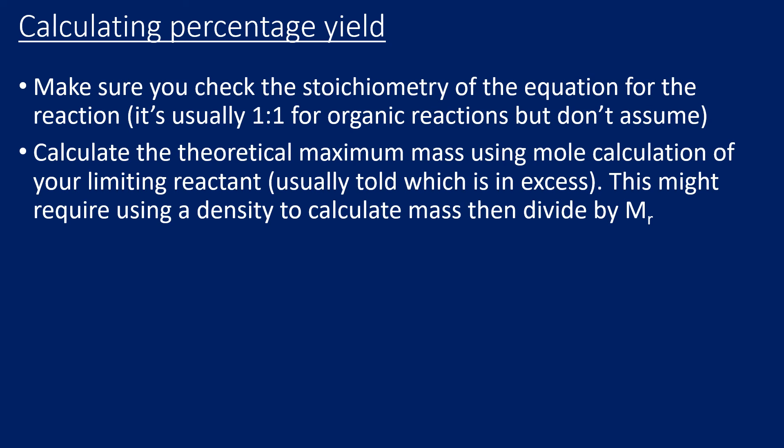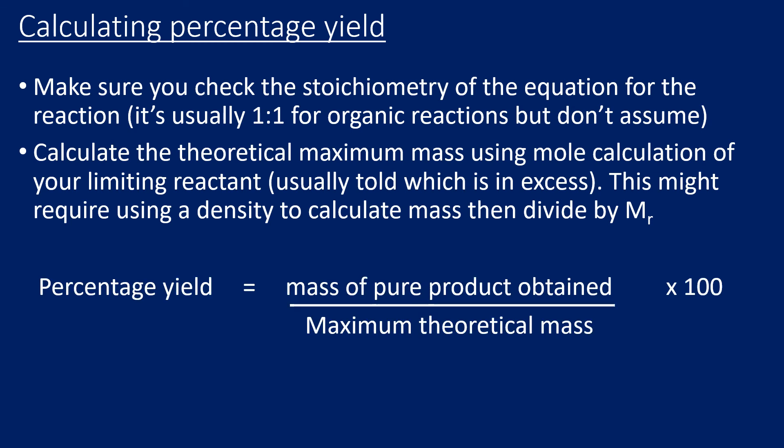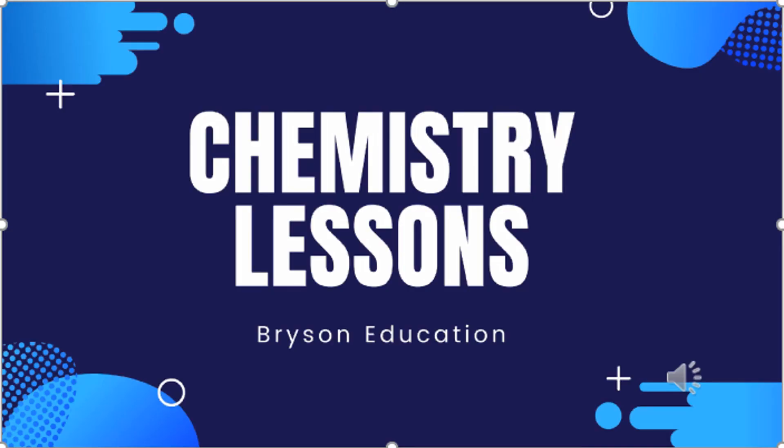Once you've got your moles of your reactants, you can calculate the mass of your product — that is your theoretical maximum mass. To calculate percentage yield, take the mass obtained in the practical divided by the maximum theoretical mass (the theoretical will always be bigger than your actual), then multiply by 100 to turn that into a percentage. And that's an overview of how we would carry out a practical to obtain a pure organic solid. Look out for the other videos on organic liquid.